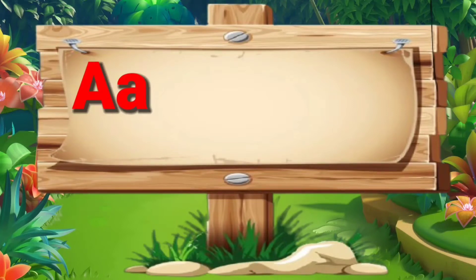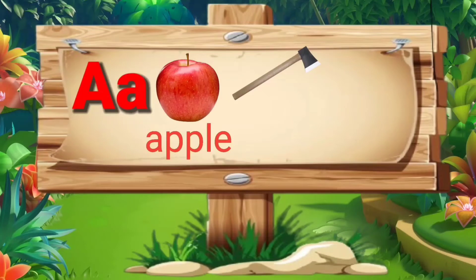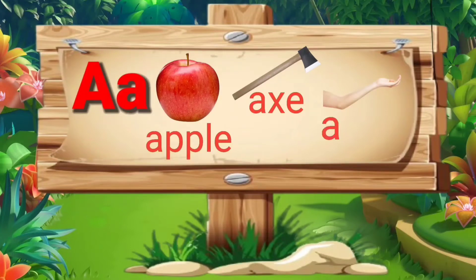A. A for apple: A, double P, L, E — apple. A for axe: A, X, E — axe. A for arm: A, R, M — arm.